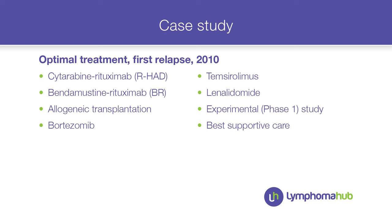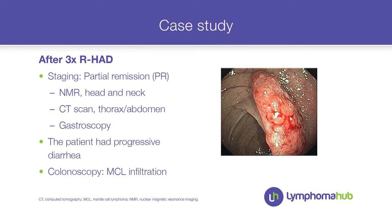such as bendamustine or R-CHOP. We could be more ambitious and go for allogeneic transplant. There were also molecular targeted approaches like bortezomib — not yet ibrutinib at that time — but temsirolimus and lenalidomide. Based on the high-risk profile and elevated LDH, we went for R-HAD plus rituximab. That is no longer current standard of care, as nowadays even in fast relapse we would consider the addition of molecular targeted approaches. Regardless, we achieved a PR.